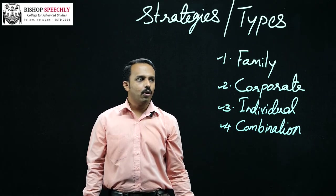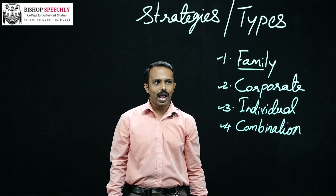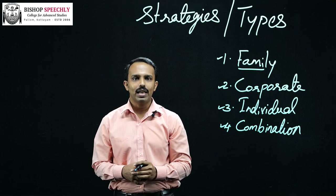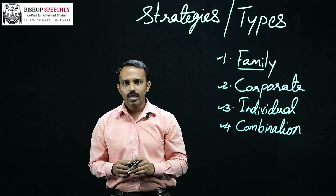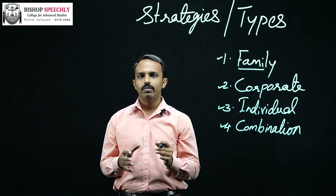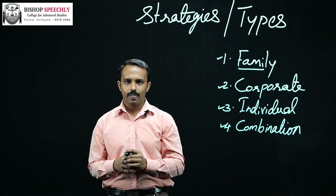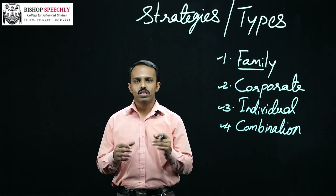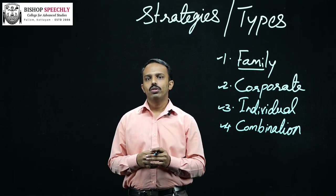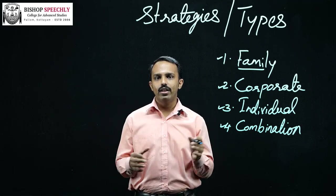First of all, we are thinking about what you mean by family branding. Family branding is the process of branding the entire products offered by a firm under a single brand name. That means all the products made available by the firm to the market are sold under a single brand. For example, take the case of Johnson & Johnson — they introduce several products to the market under the same brand name, Johnson & Johnson.